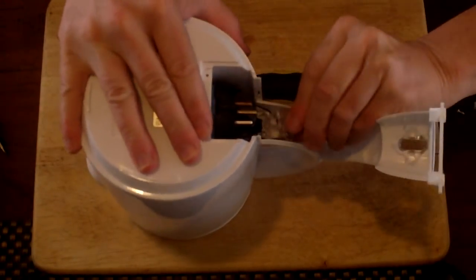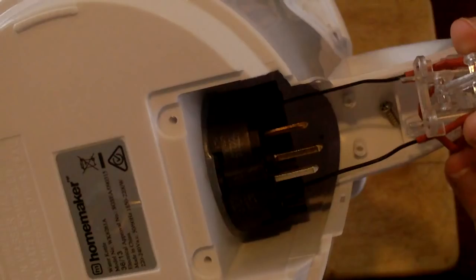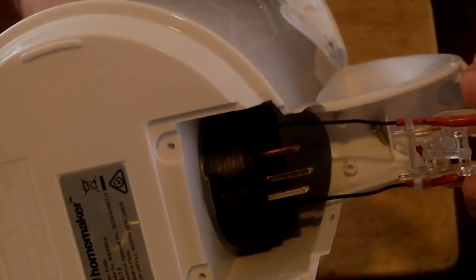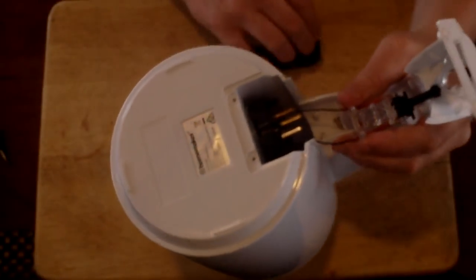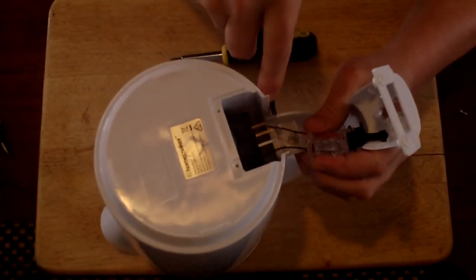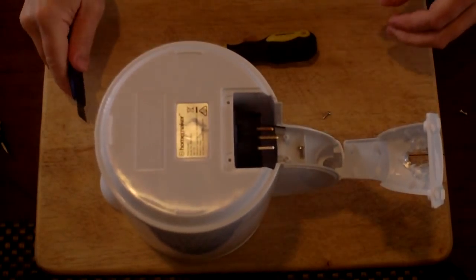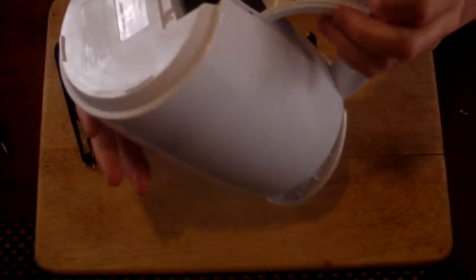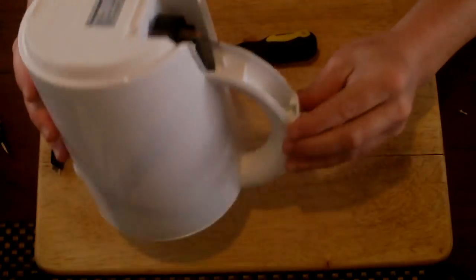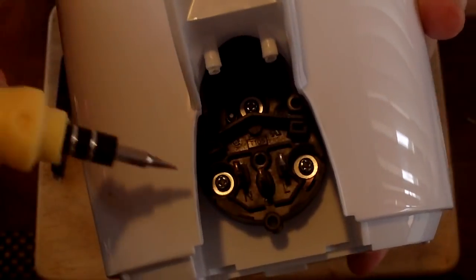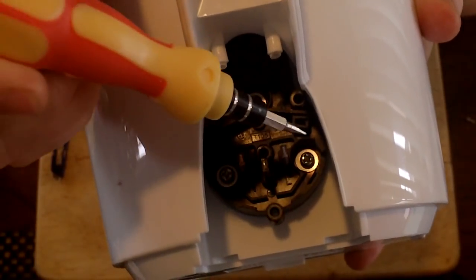There we go. That unscrews that bit, and you can just pull that bit off. Okay, there's the switch out of the way. They can just be cut off. We don't need it. Get it out of the way. Now the only thing holding the element is those three screws now. One up there, one there, and one there. Just Phillips head again.